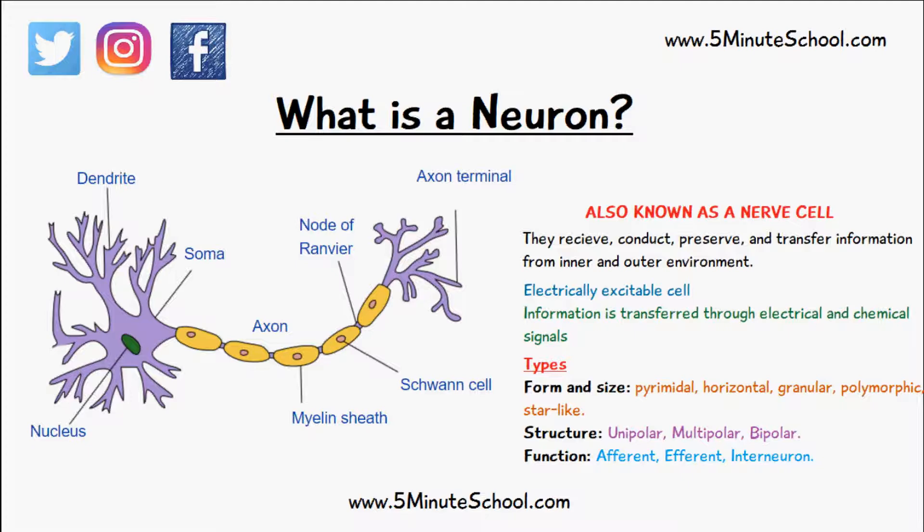Efferent neurons are motor and they're heading from either the brain or the spinal cord to a muscle or an organ. We also have interneurons, which are the connection between afferent and efferent neurons.